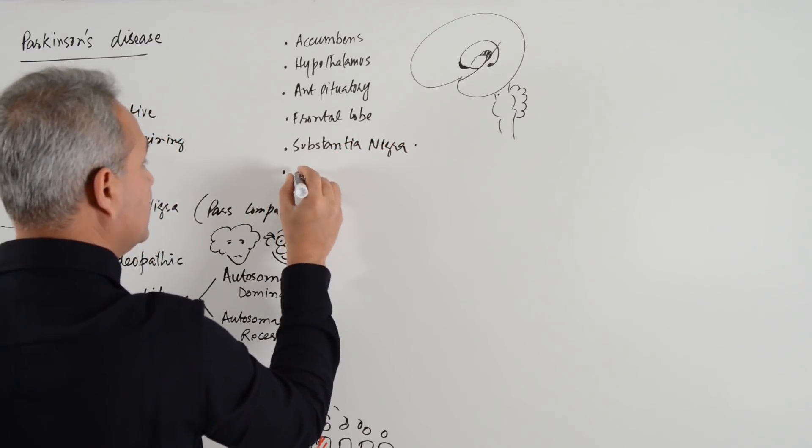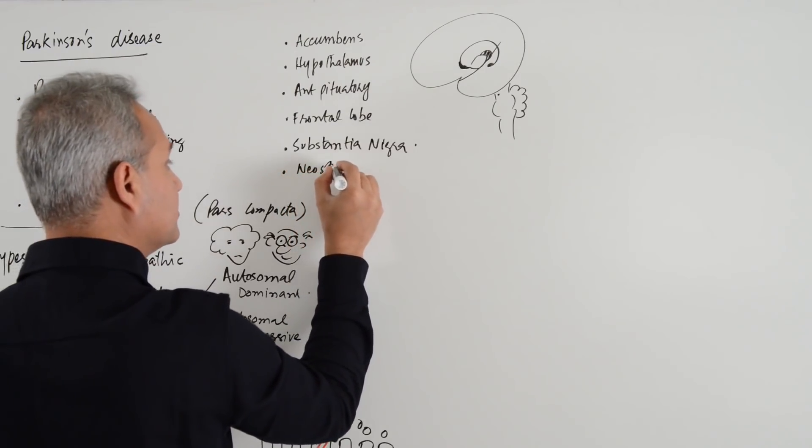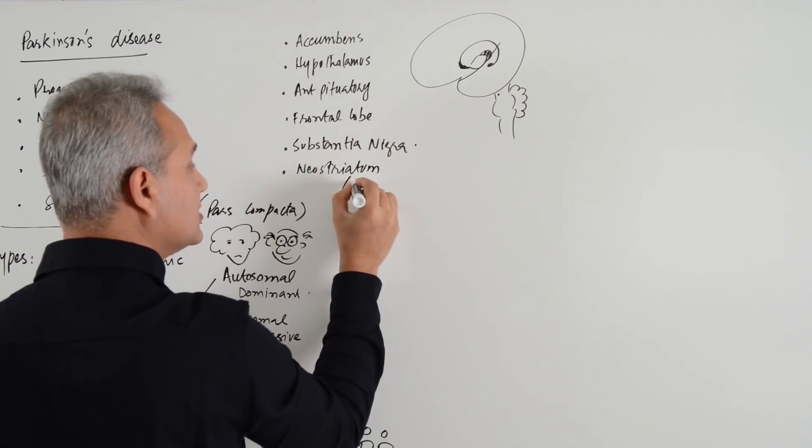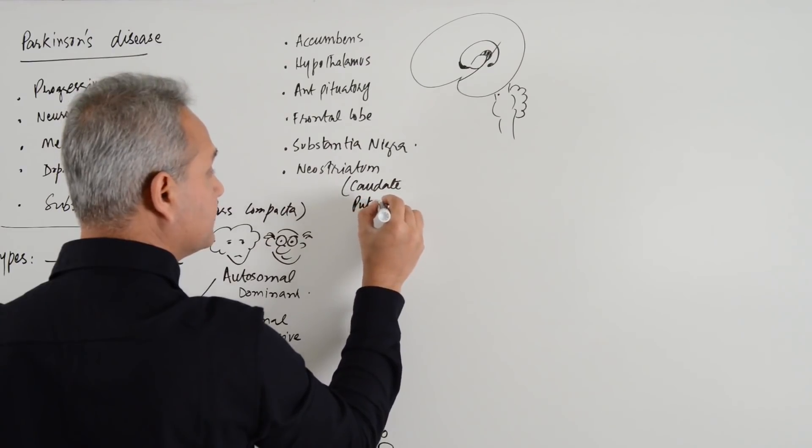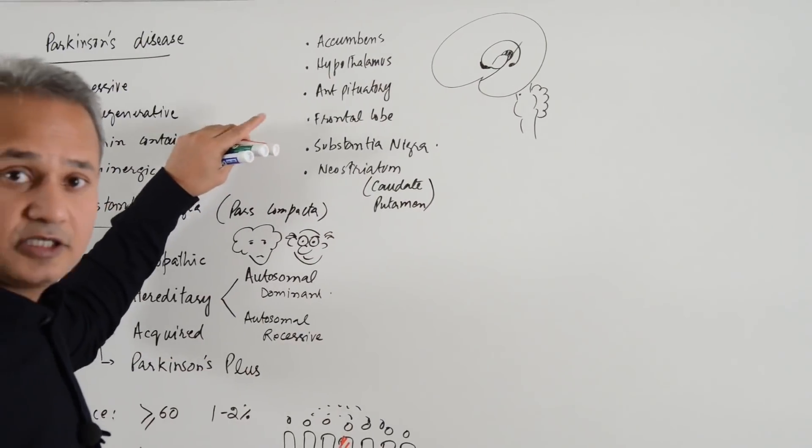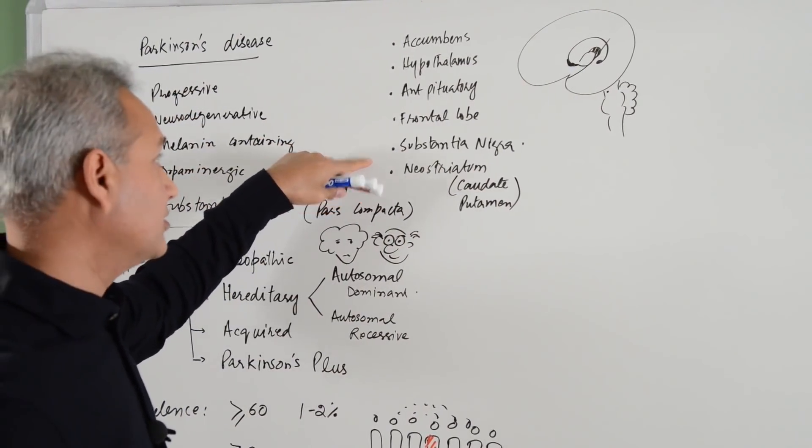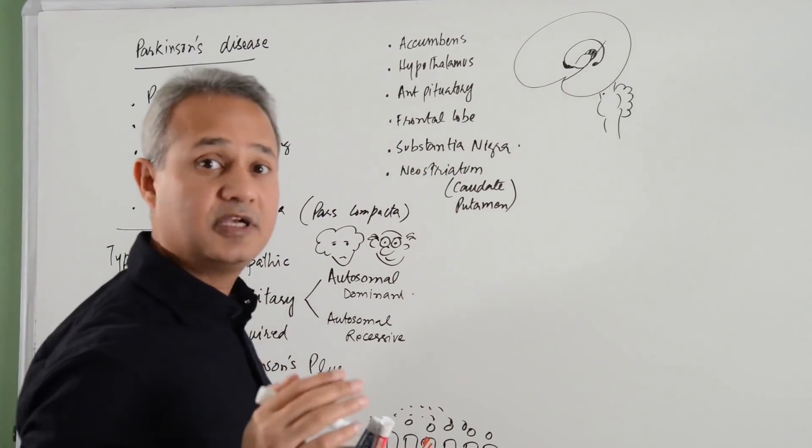And finally, the neostriatum, which consists of nucleus caudate and putamen. These are the nuclei. So, we will talk about that. Our discussion today is going to be especially about the substantia nigra and the neostriatum. But these are the participants in the dopaminergic pathways.